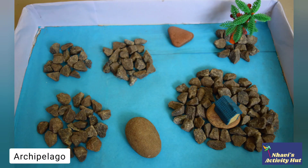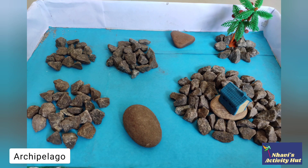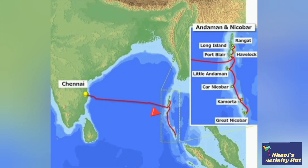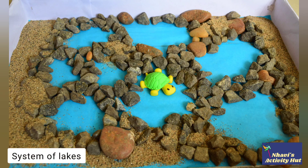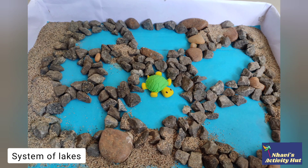Archipelago is an extensive group of islands. Lake system means a water body or portion with no observable flow. It includes a point at which an outlet stream begins to form.